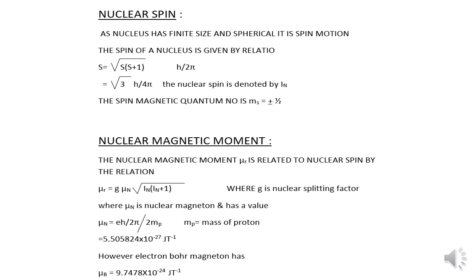Now let us know about another important property of the nucleus, that is nuclear magnetic moment. The nuclear magnetic moment mu R is related to nuclear spin by the relation mu R equals G mu N into square root of In into In plus 1, where G is called nuclear splitting factor, mu N is nuclear magneton and has a value mu N equals e H by 2 pi divided by 2 Mp. It comes out to be 5.505824 into 10 raise to minus 27 joules per tesla.